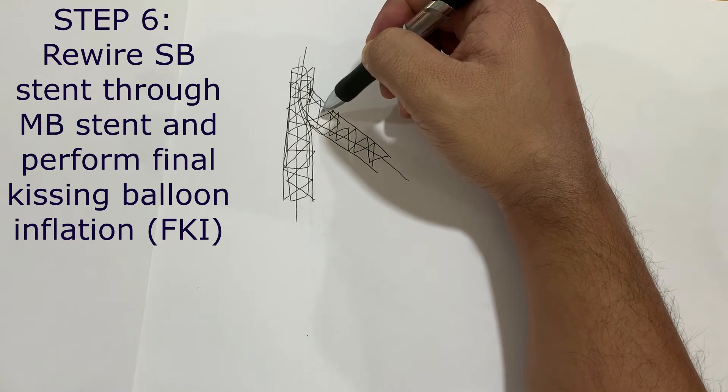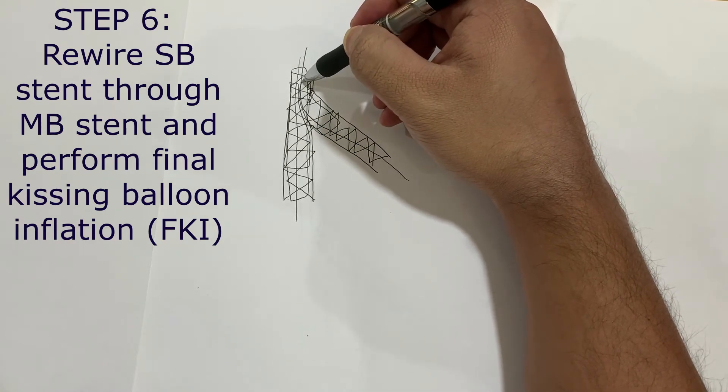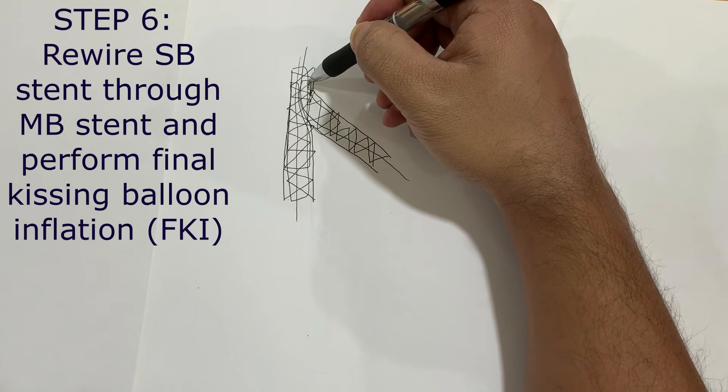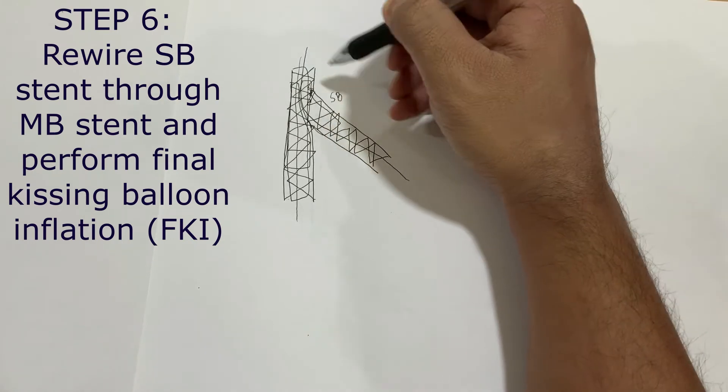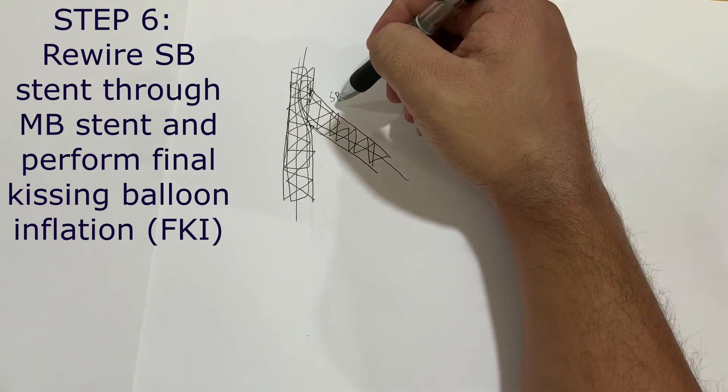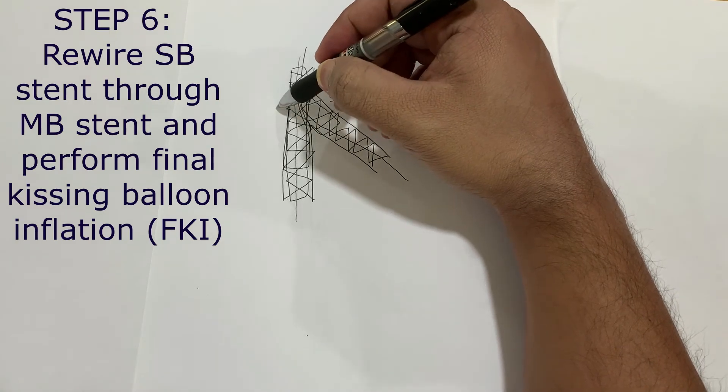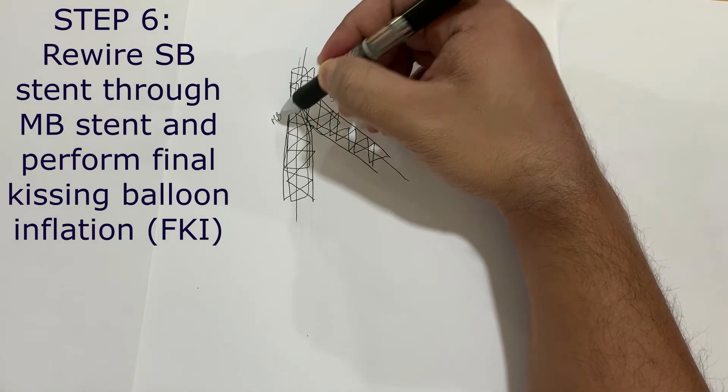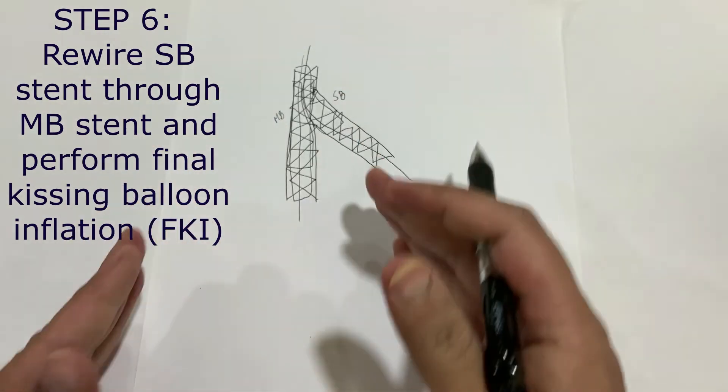The important thing with this is that what I tend to do is that I inflate the side branch stent first or the balloon first, and then I do the main branch after that, and then finally I do a final kissing balloon stenting inflation.